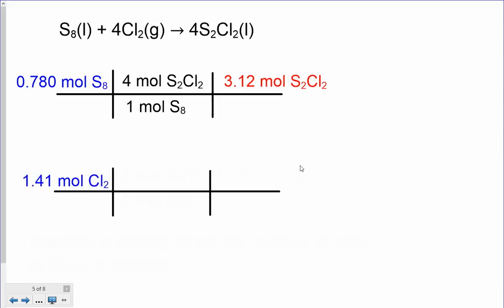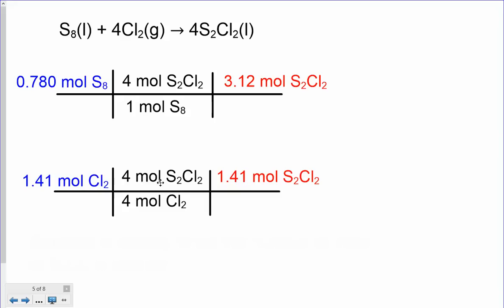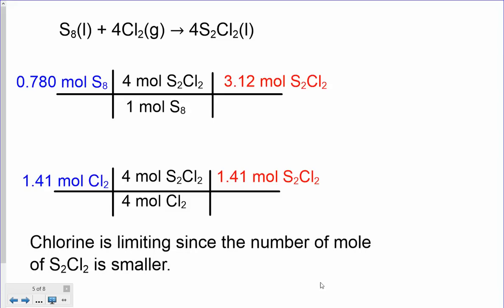From our moles of chlorine, how much product can we make? Setting up molar ratios from the equation: four moles of chlorine to four moles of product — it's a one-to-one ratio, so whatever moles of chlorine we have, we get the same number of moles of sulfur chloride. Since chlorine only allows us to make 1.41 moles of product, and sulfur would allow 3.12 moles if we had enough chlorine, that means we're going to run out of chlorine first. Chlorine is the limiting reactant since it gives the smaller number of moles of product.